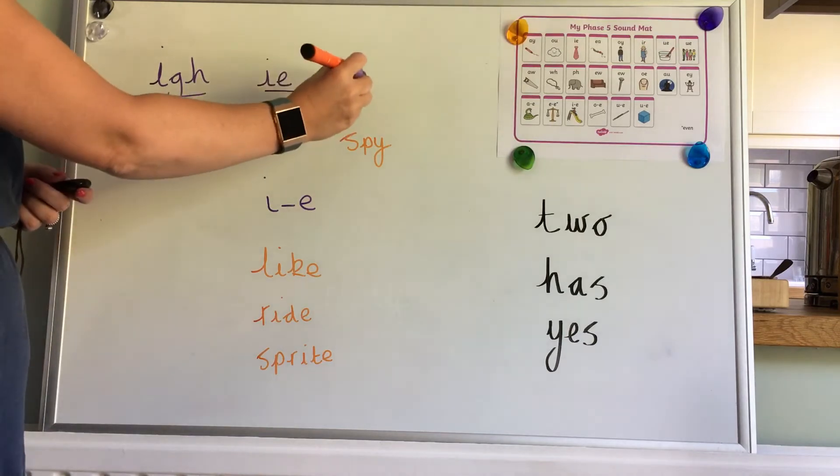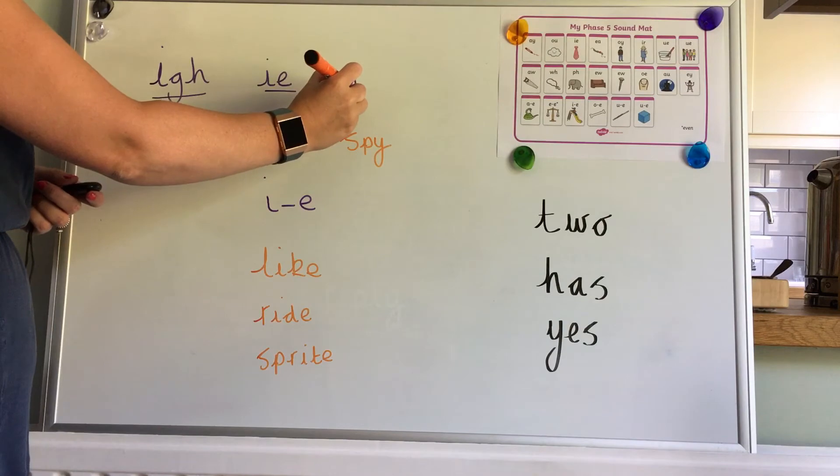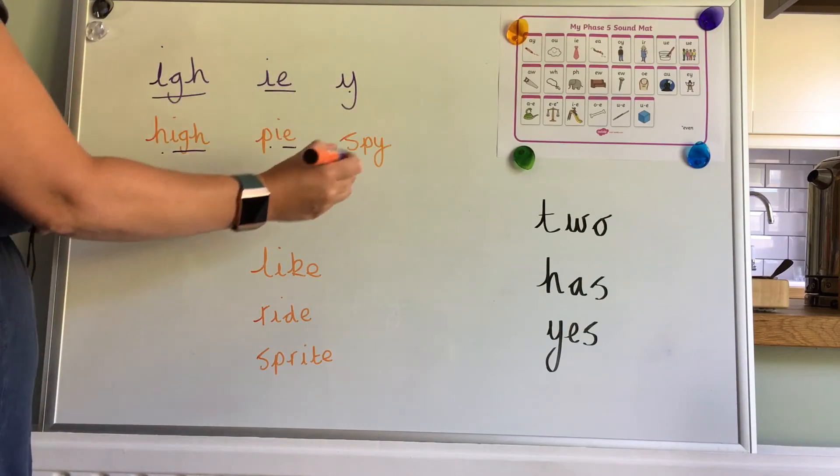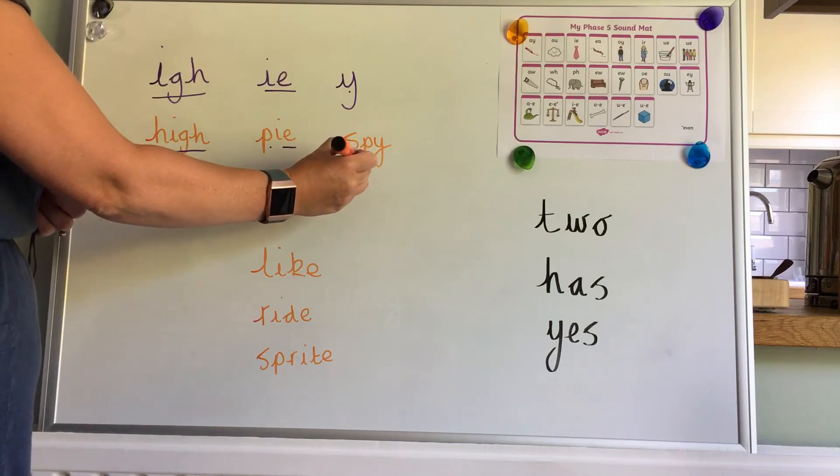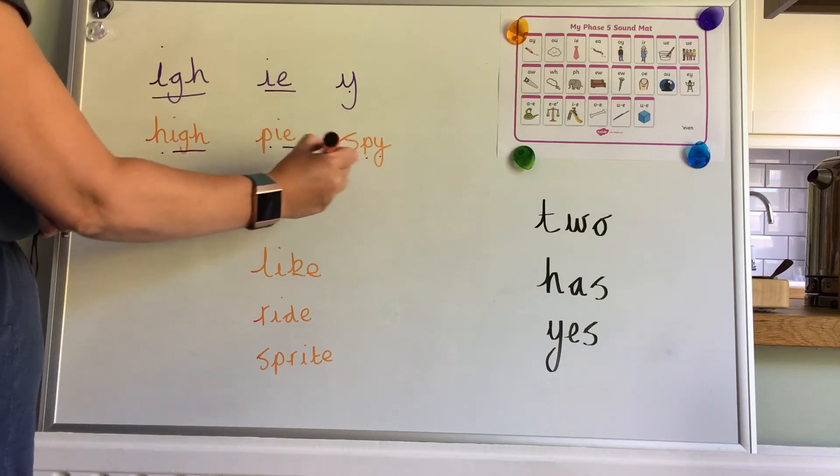Finally, we looked at our spelling of the I sound which looked like Y but sounded like I, and it came in words like this: S-P-Y, spy.